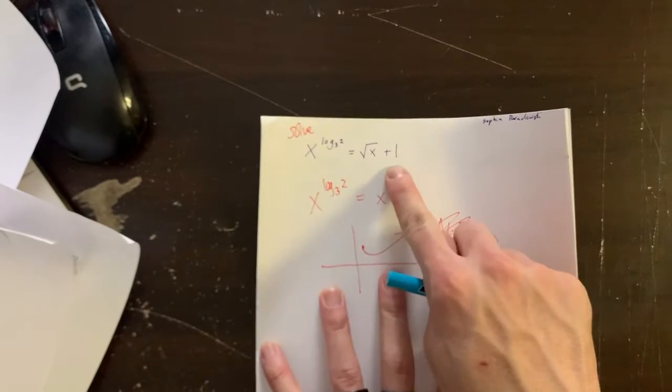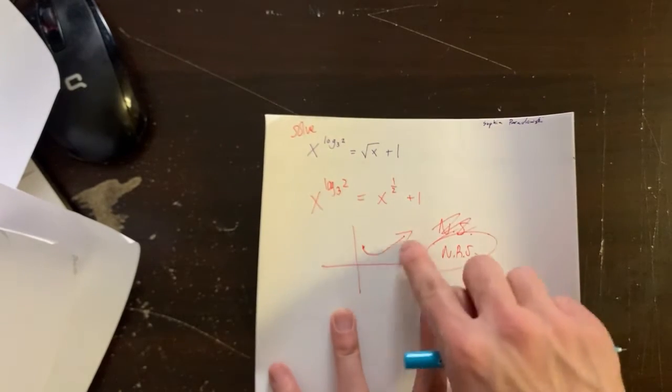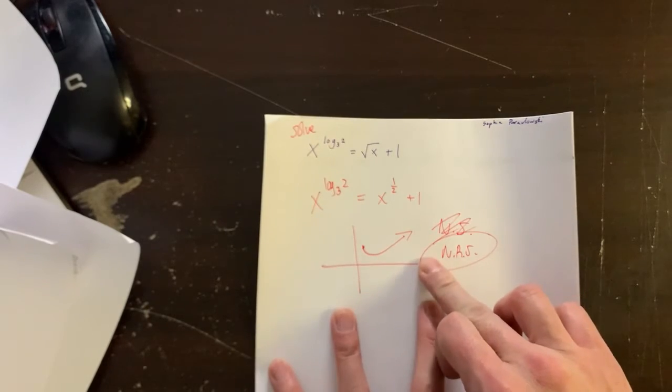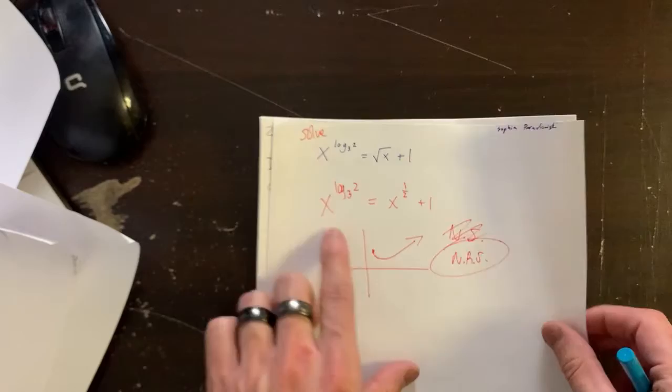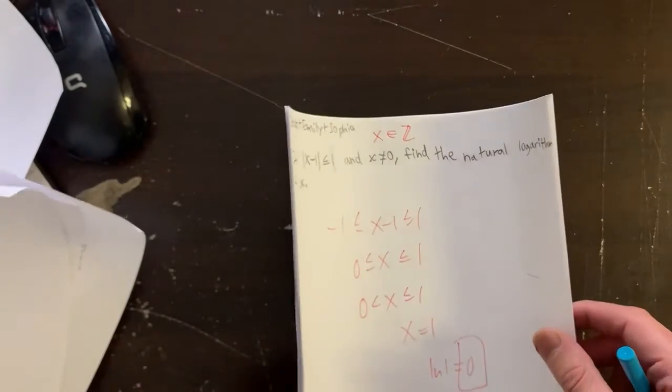This equation here actually has no solution because if you graph it on Desmos, this is a graph. And this graph never strikes the x-axis. So it has no solution, or at least no real solution. So it might have a solution, but it's not going to be a real number. Maybe it's something with i's and stuff.